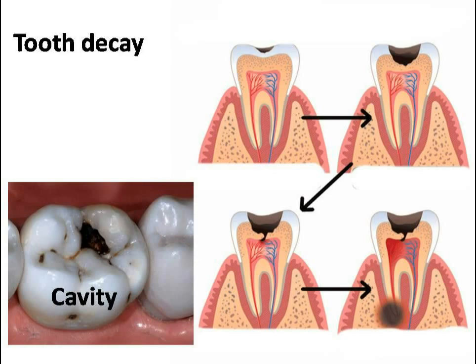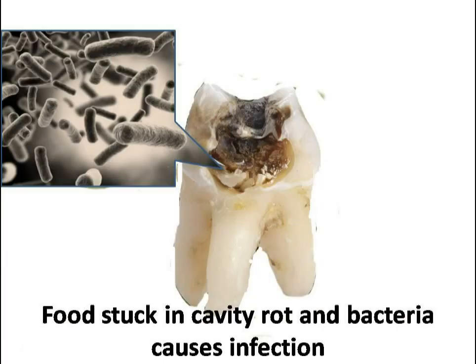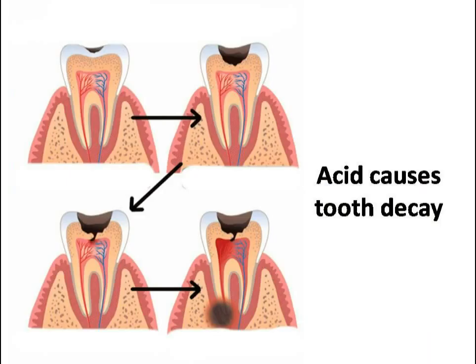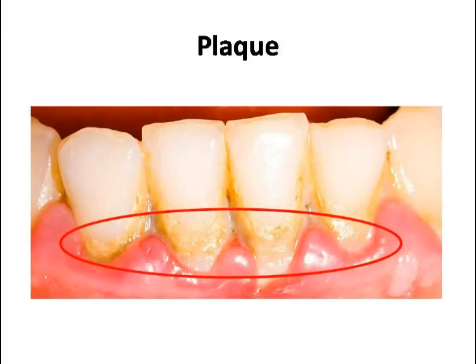The cavity lets food and water come in contact with nerves, and then it hurts. Food — especially sweet candy, chocolate, etc. — may stick inside the cavity and germs grow on it. Some food sticks to the teeth or gets stuck between the teeth. Microbes produce acid when breaking down food particles, and that acid eats away the enamel. Those germs cause infection near the nerves, and it really hurts badly.